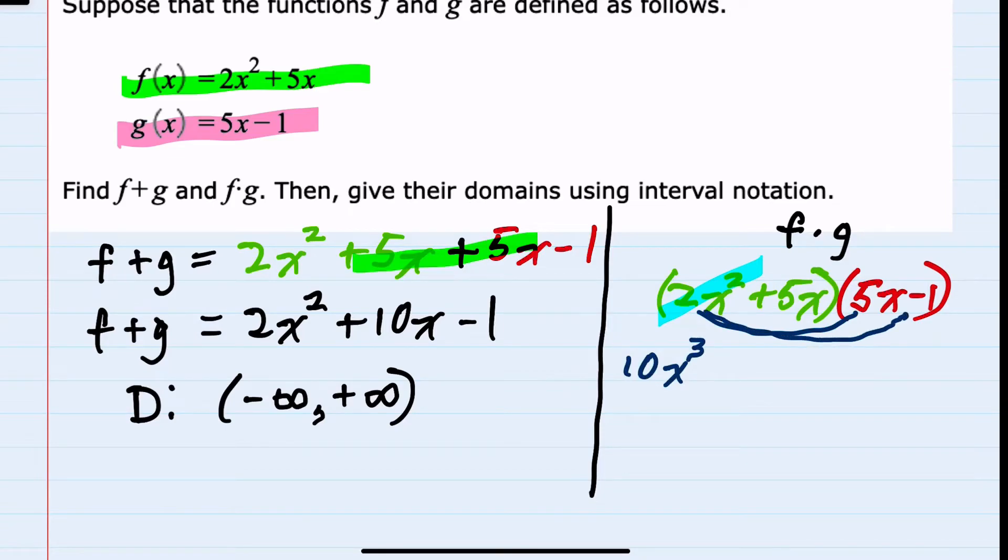multiply the 2x squared times the minus 1, that's minus 2x squared. Then distributing the 5x would give us 5x times 5x equals 25x squared, and then 5x times minus 1 equals minus 5x.